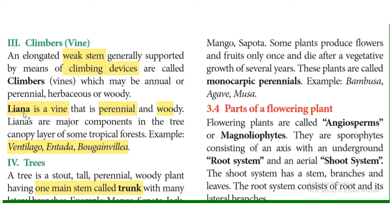A liana is a vine that is perennial and woody. Although it climbs, it has a strong stem. Lianas are major components in the tree canopy layer of some tropical forests. Examples include Ventilago, Entada, and Bougainvillea. Some of these plants can grow more than 30 meters.